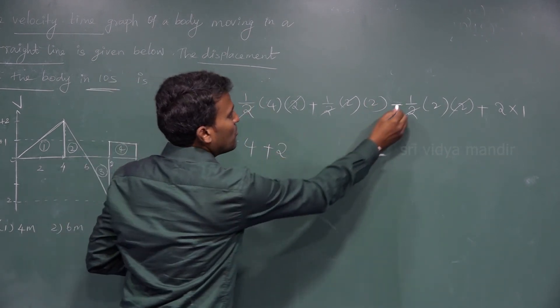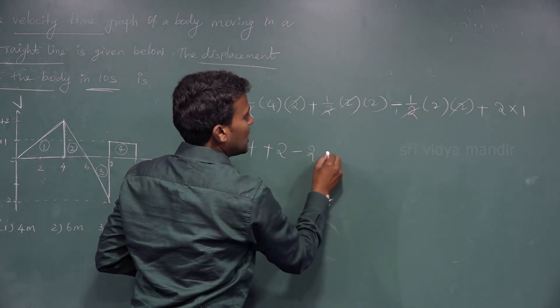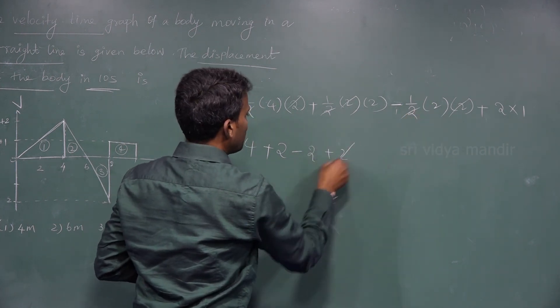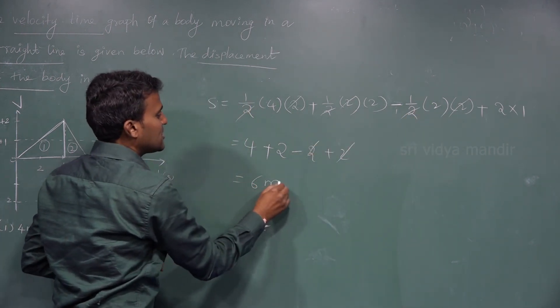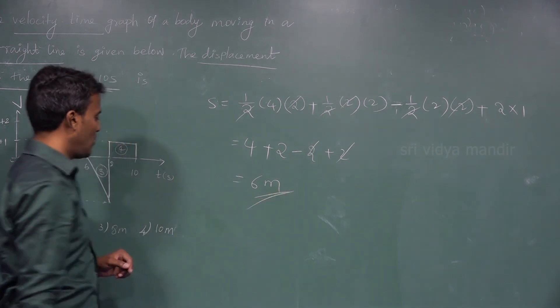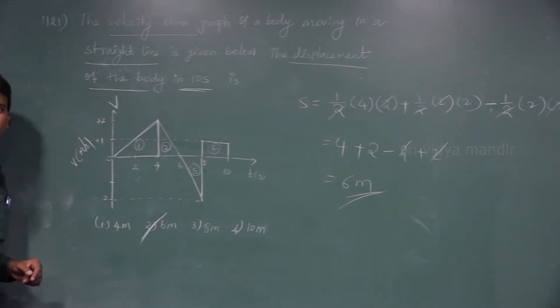The resultant is 4 + 2 − 2 + 2 = 6 meters. So the answer is 6 meters, and option 2 is the correct one.